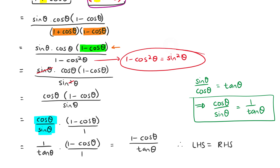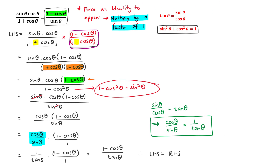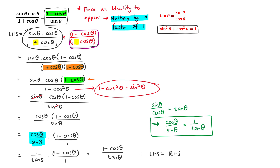Looking back at this example: we started with an identity that had none of the standard forms in it. Because of that, we had to force one to appear by multiplying by the factor of 1 — the conjugate. Once we did that, we introduced the 1 minus cos squared identity, simplified it to sin squared, and then by basic algebra proved it equal to the right-hand side.